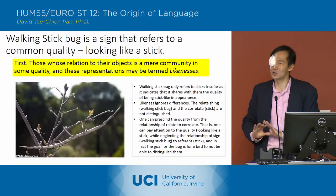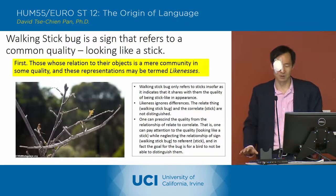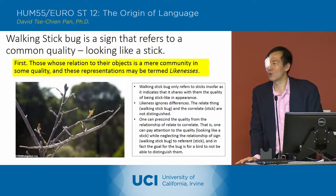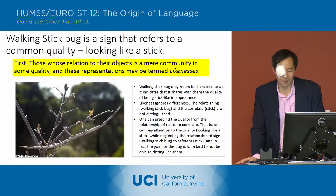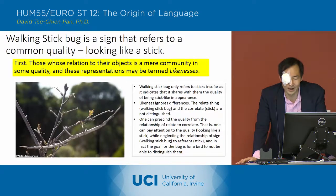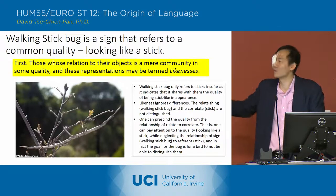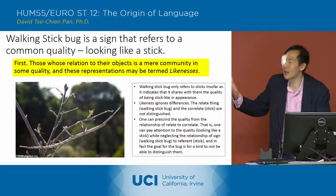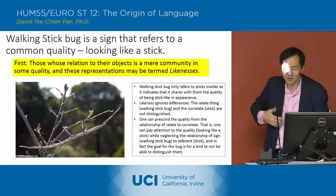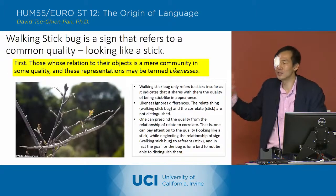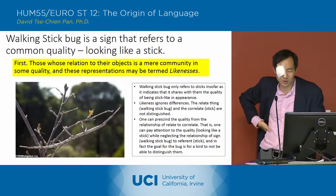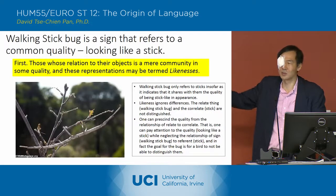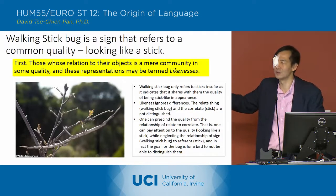The whole point is to not distinguish between the two, and just to focus on what they share as a quality, which is that appearance. So you're presenting the quality from the relationship to the relate and the correlate. You can pay attention to the quality — looking like a stick — while you neglect that relationship of the sign, which is the bug, to the referent, which is the stick.